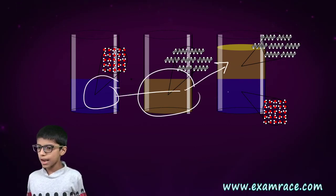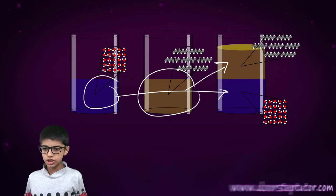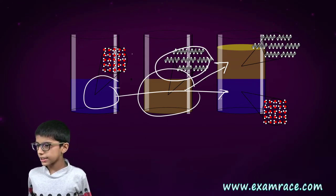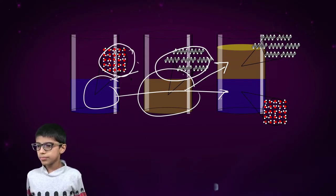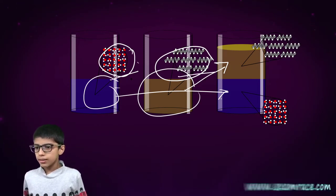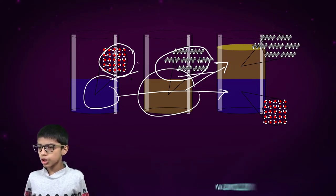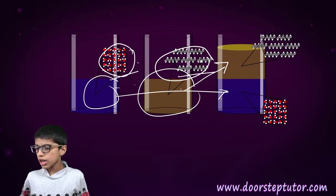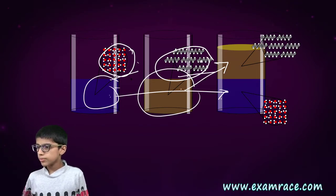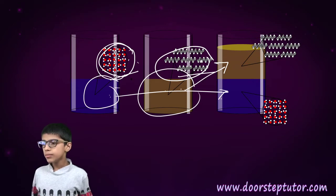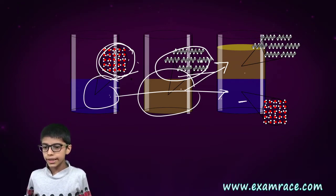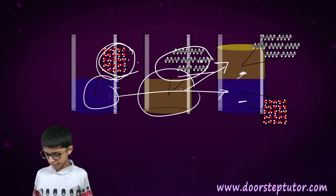Oil floats up and water settles down. Why is it so? There is a difference between the molecules. The molecules of oil are different than that of water. The molecules of water are more dense. Therefore, they remain down and oil floats up.